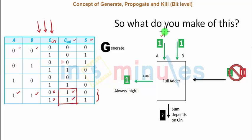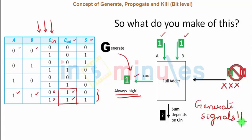So when my A is 1 and my B is 1, my C out is going to be always high irrespective of my C in, or my C out is generated. And this is the understanding of a generate signal. The generate signal is high if both my inputs are high. Very simple and very straightforward.